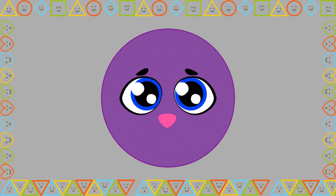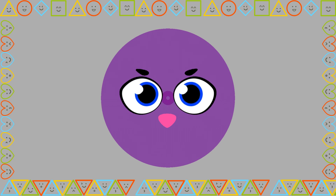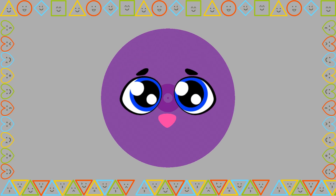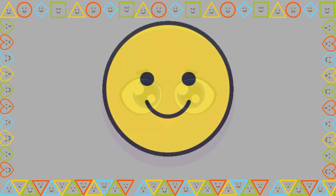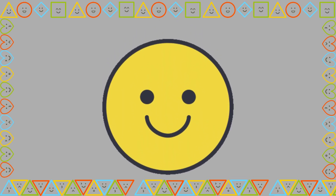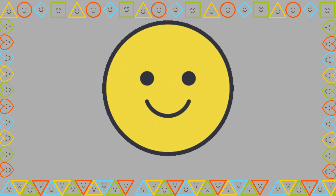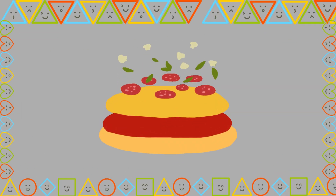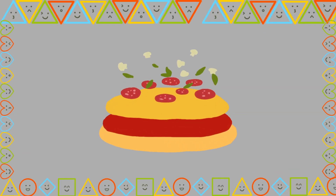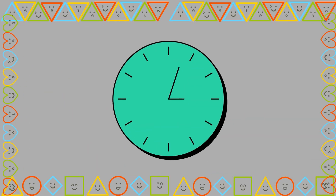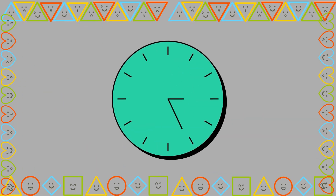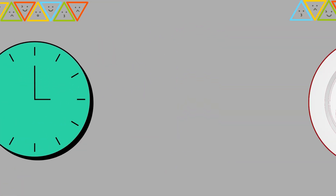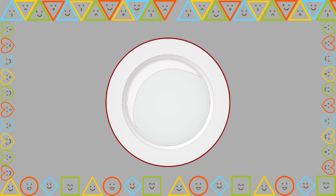Look at this shape. It's called a circle. Circles are round and have no corners. Let's find some circles around us. Do you see the full pizza? It's a circle. And look at that clock — it's a circle too. Wheels and plates are also circles.